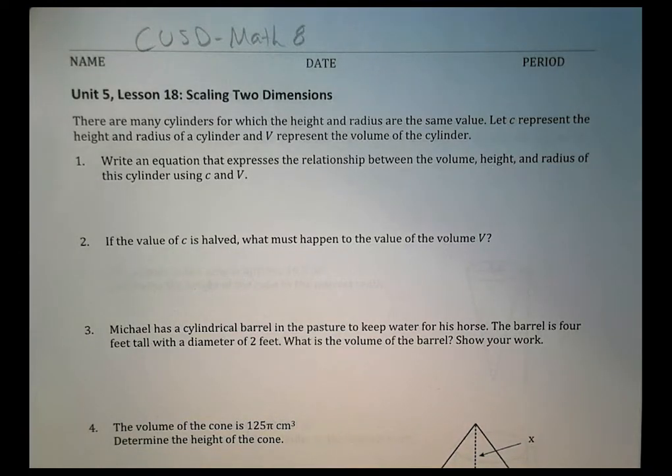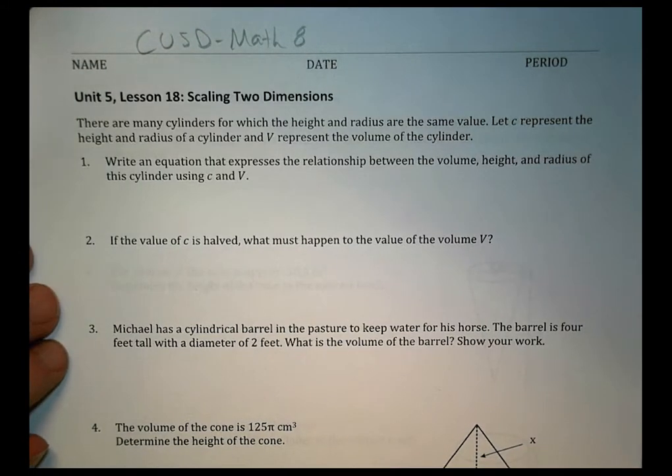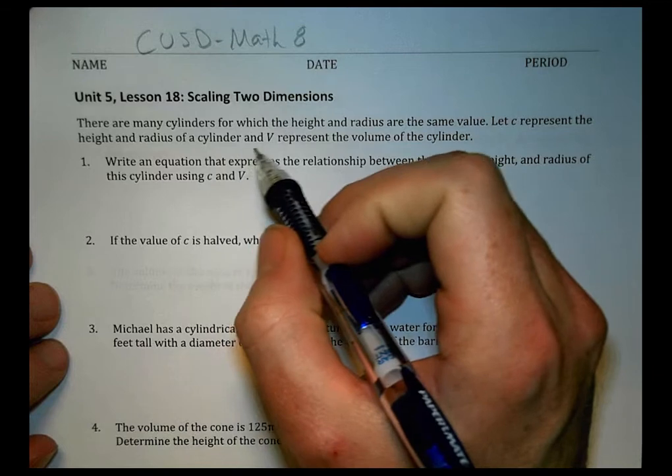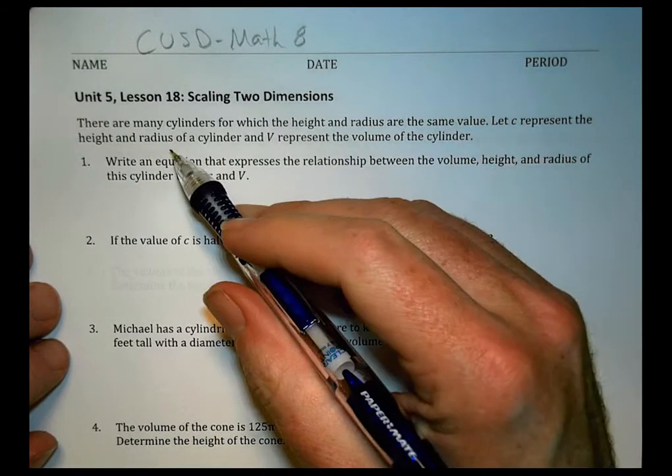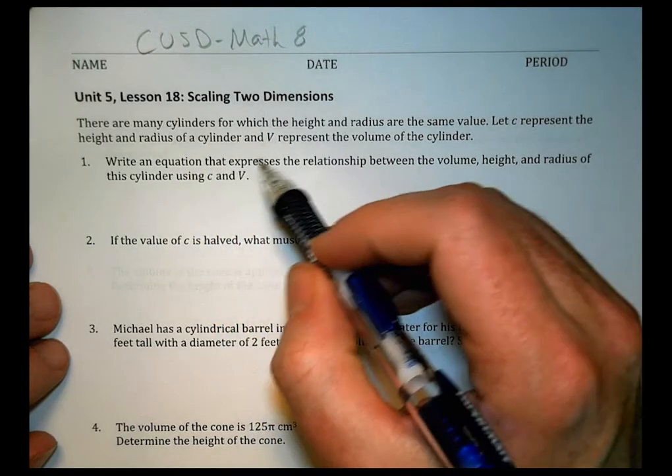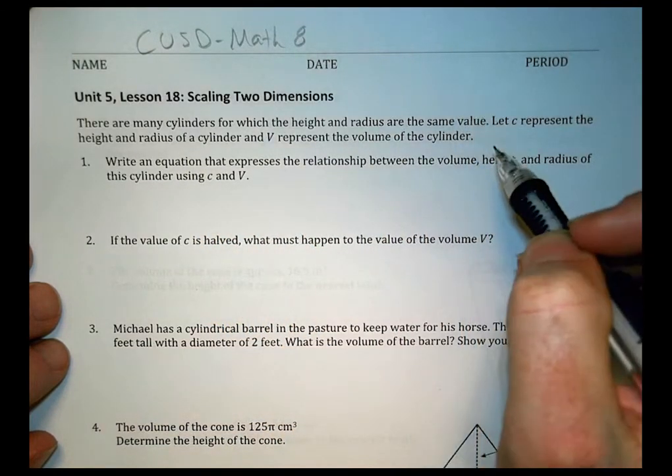Hey there, this is Math 8, Unit 5, Lesson 18, Scaling in Two Dimensions. It says there are many cylinders for which the height and radius are the same value. Let C represent the height and radius of a cylinder, and V represent the volume of a cylinder.